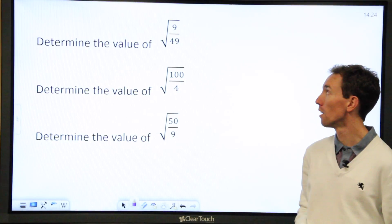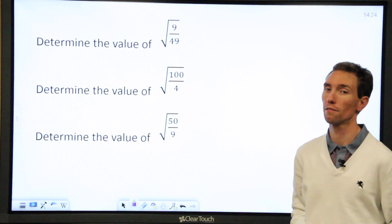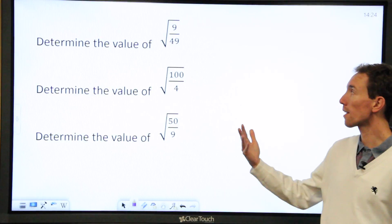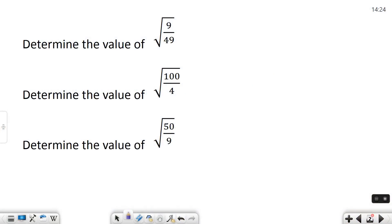It says determine the value of the square root of 9 over 49. What I like to do is break this up into two different parts. Because really, the square root of that fraction is really the square root of the top number divided by the square root of the bottom number. So I can rewrite it as this, and then I can just take it one piece at a time.